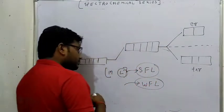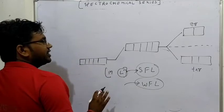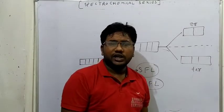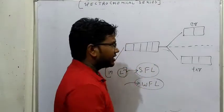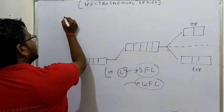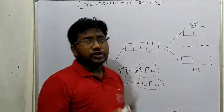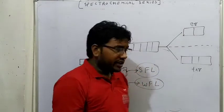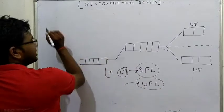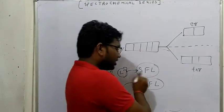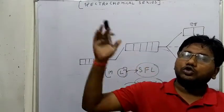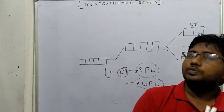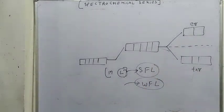Strong Field Ligand और Weak Field Ligand को spectra के basis पर हमने एक series design कर रखी है। इसे लिखना पड़ेगा आपको। यह series spectra के basis पर design और arrange की गई है। जो energy को ज्यादा redistribute करते हैं, ज्यादा splitting करते हैं वो Strong Field Ligand हैं, और Weak Field Ligand वो होते हैं जो low splitting करते हैं। प्लीज इसे नोट कर लीजिए।